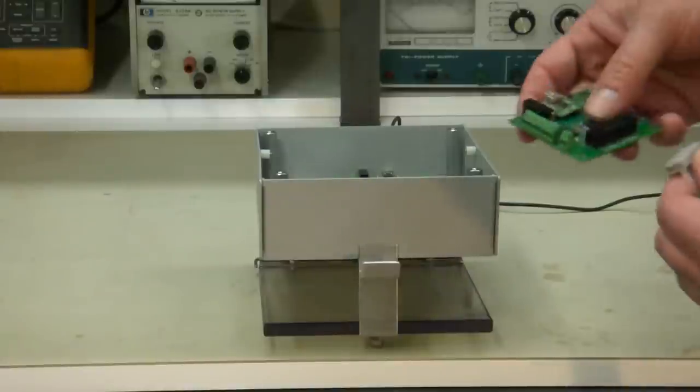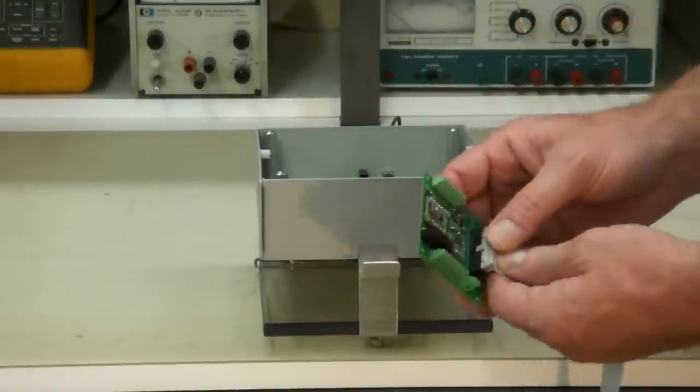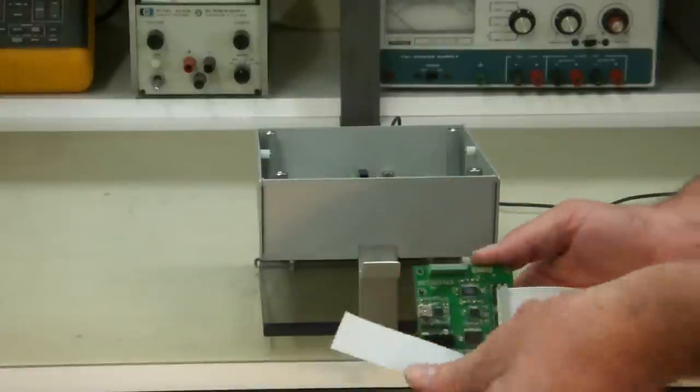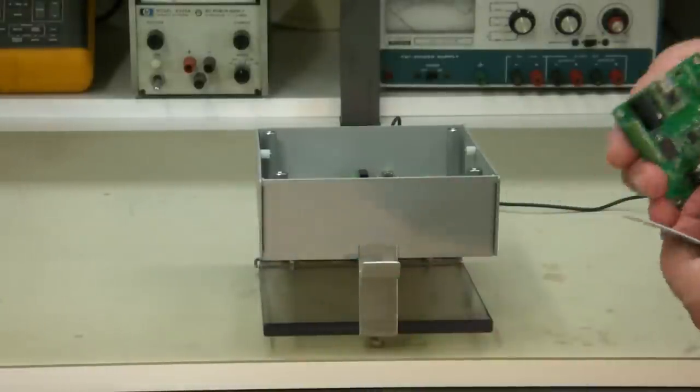So let's just go over the ribbon cable. Our ribbon cable will plug right into this shrouded header right here, just like this, and then you can wire this end up to your test pins. That's simple and straightforward.